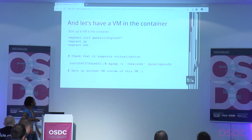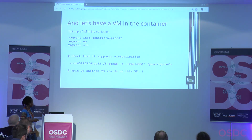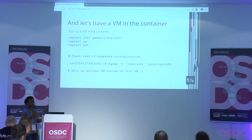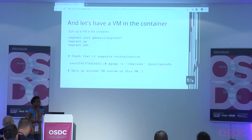Without the privilege flag, we also need to remount the sysfs and proc/sys file systems because by default they are read-only, and the container needs to be able to write to those file systems. You can check that it supports virtualization, and you can also spin up another VM inside the VM if you want, because it supports nested virtualization.